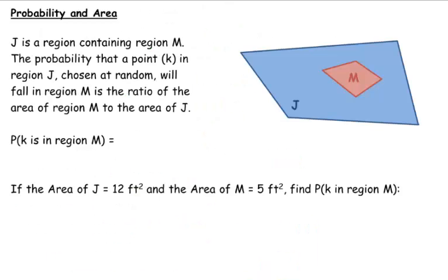On the next slide here, we're looking at probability and area. And so J, area J, is a region, a larger region, that contains a smaller region.